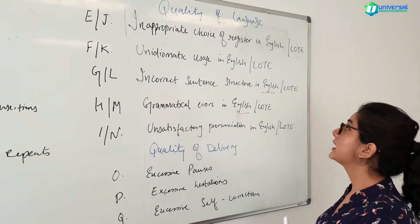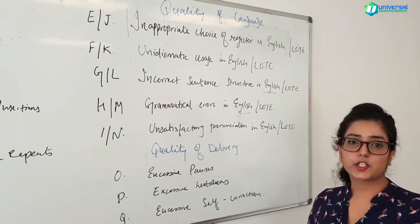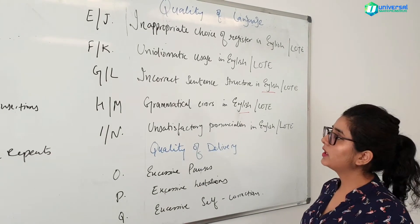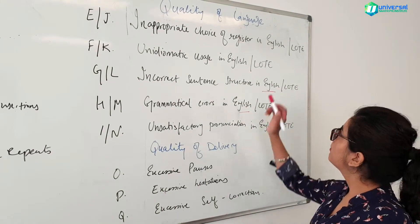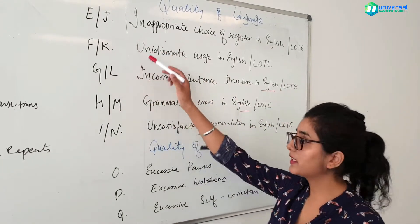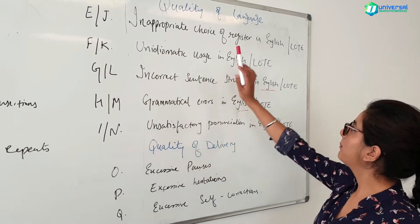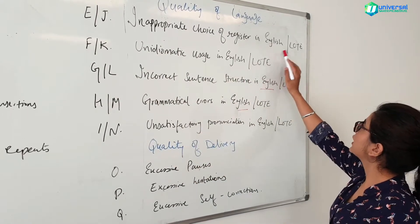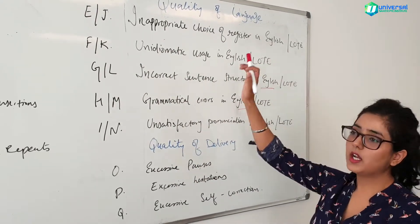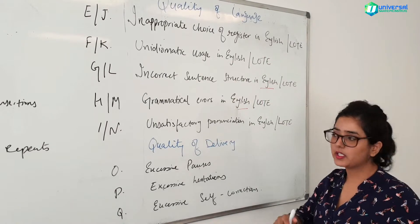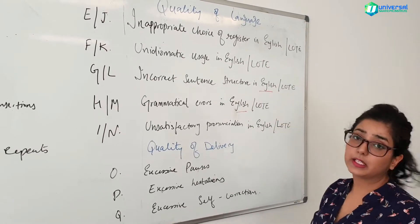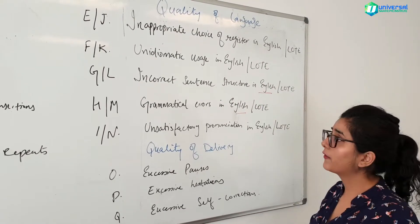Now we'll look at quality of language. For the sake of this video I have combined the codes — there are actually ten codes, but I've mixed them together because English and language other than English have two separate codes for each. So let's take a look at all of them.